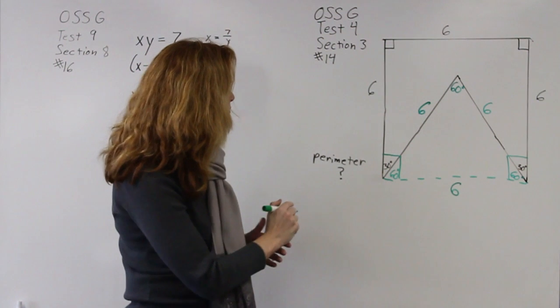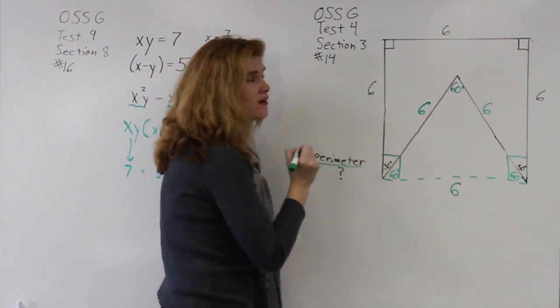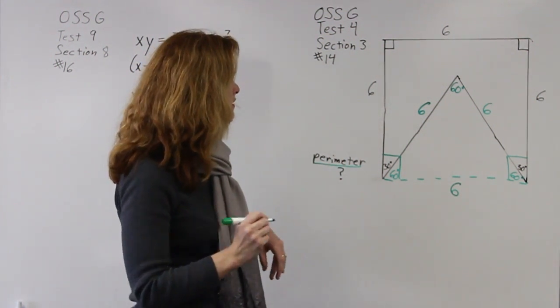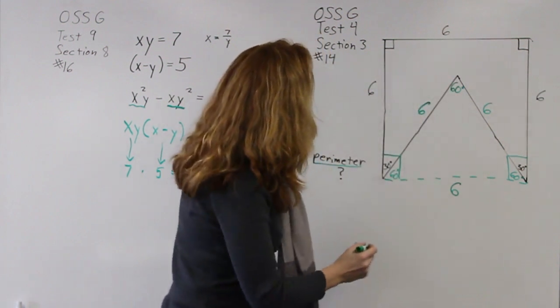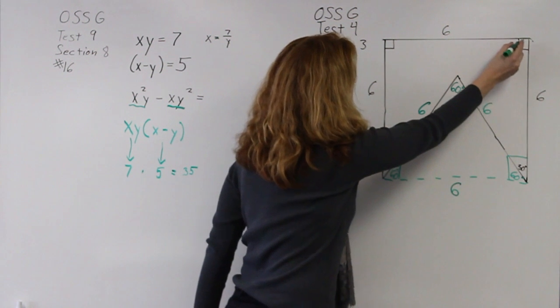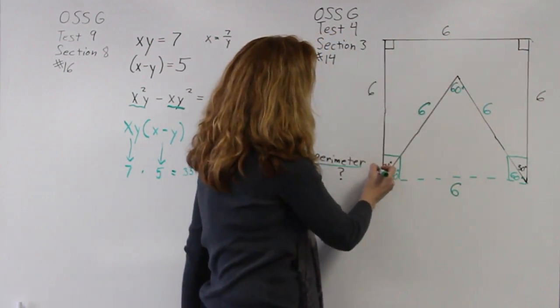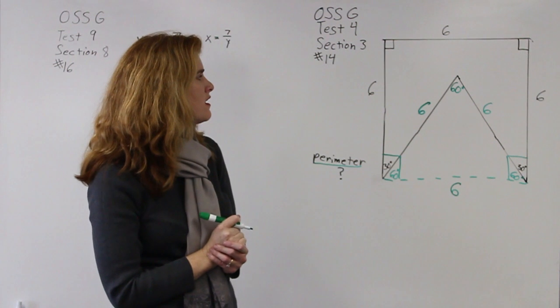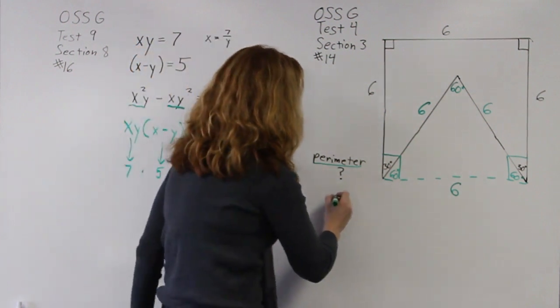So now remembering perimeter, I have to add up all of the lengths around the figure. So I'm going to add up one, two, three, four, five sides that are all six. Five times six would give me thirty.